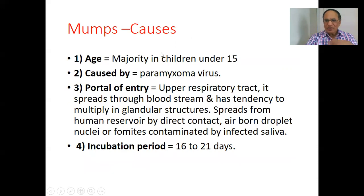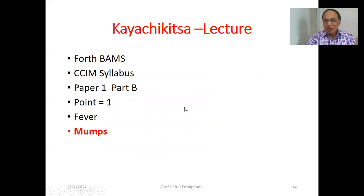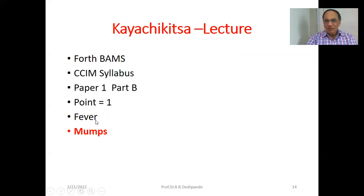Quick revision of mumps: It is most common in children under 15, caused by the Paramyxovirus. The portal of entry is the upper respiratory tract; it spreads to the bloodstream and multiplies in glandular structures. It spreads from human reservoir by direct contact, airborne droplet nuclei, or fomites contaminated by infected saliva. Incubation period is 16 to 21 days.